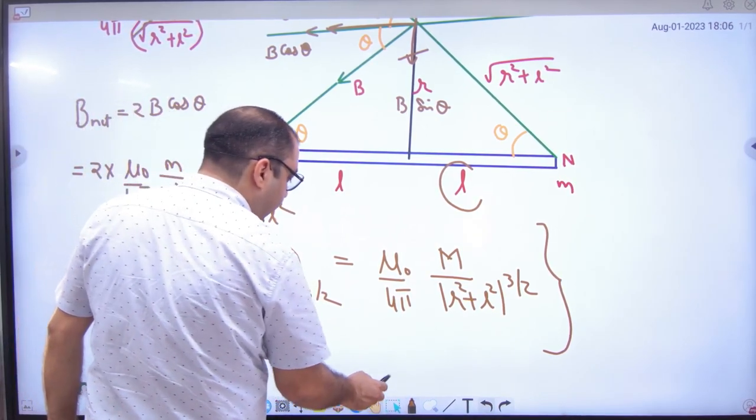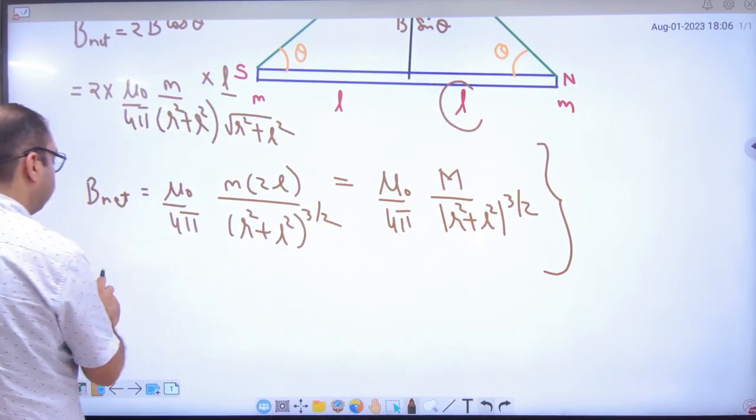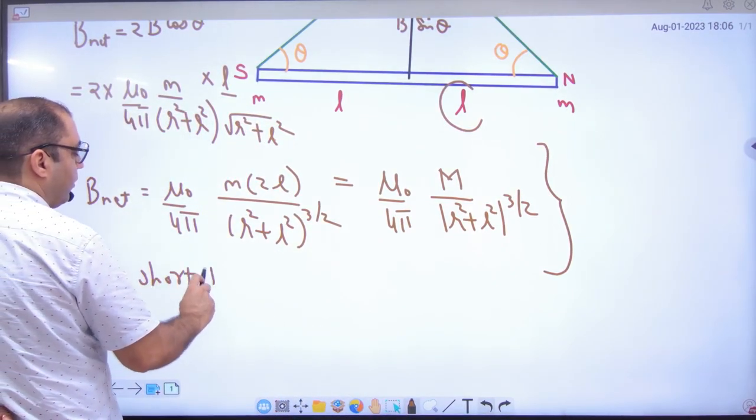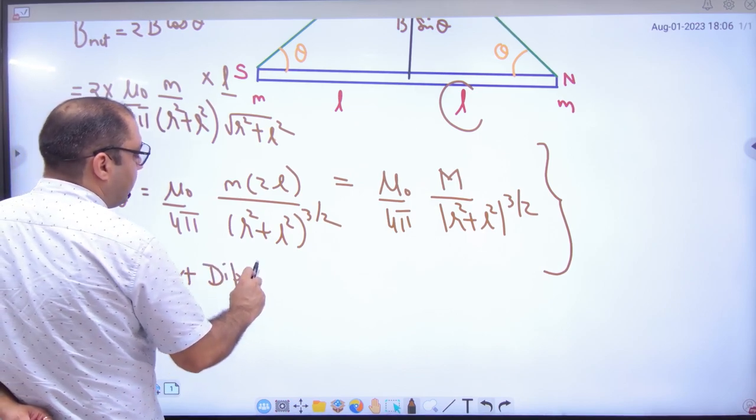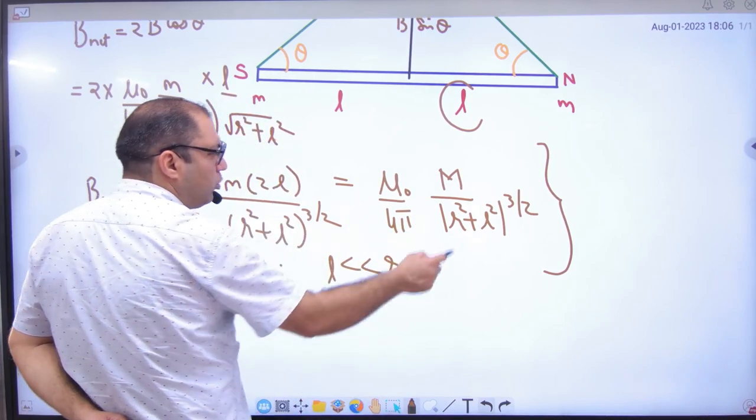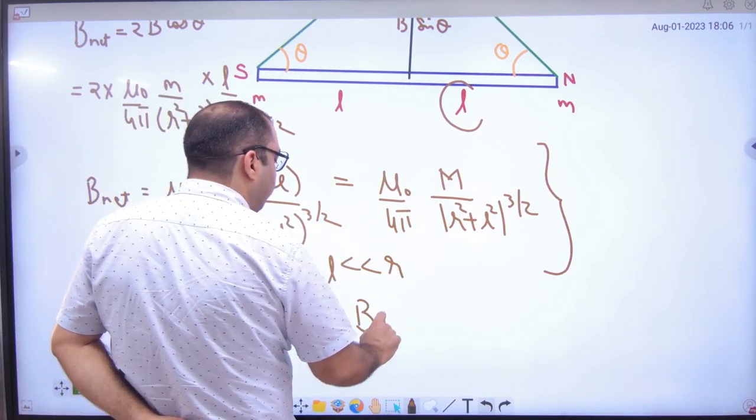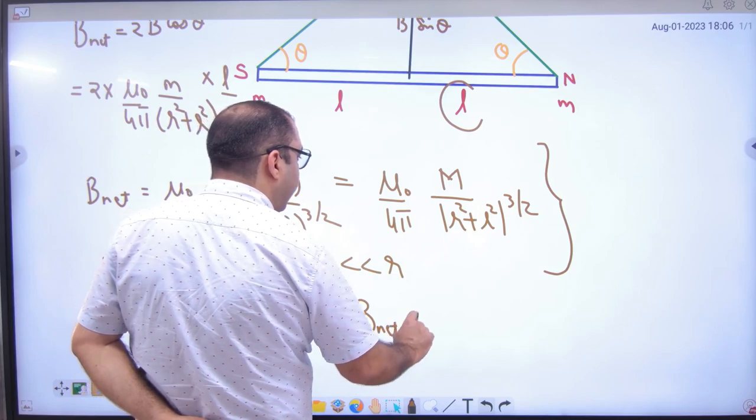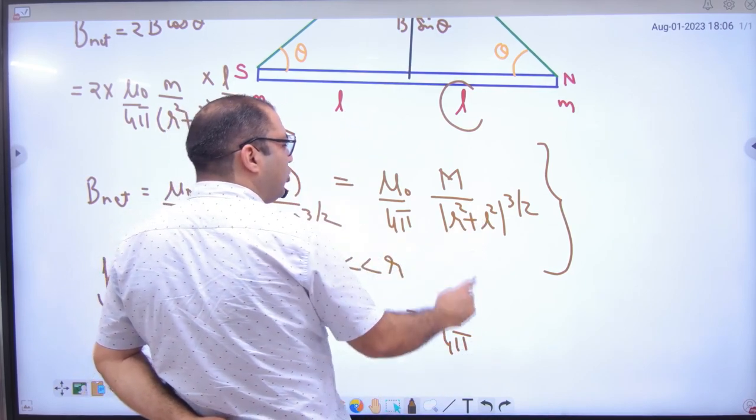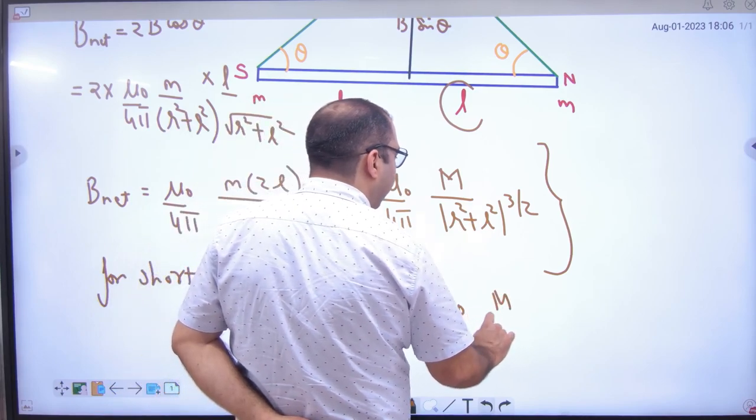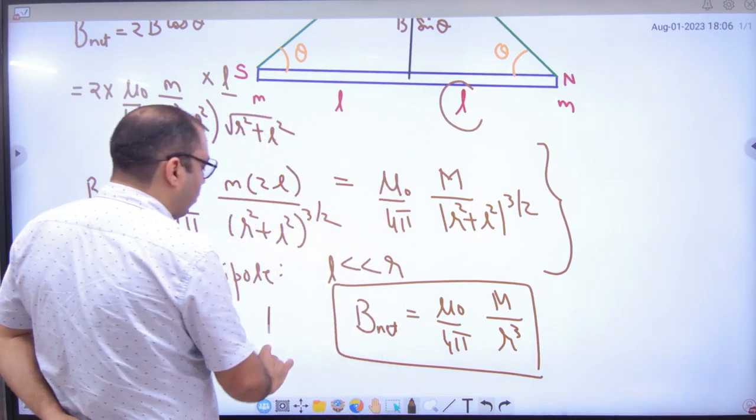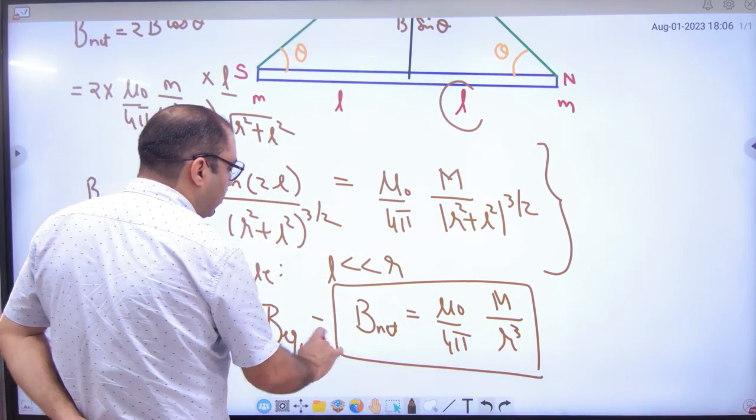And for short dipole, what do we do for short dipole? L is very much less than R. R is very big. So we neglect L. So we neglect L. So B net value short dipole will be mu0 by 4pi. L. If you put 0 here, then the answer will be M divided by R cube. So this is the equatorial of short dipole. This is the formula.